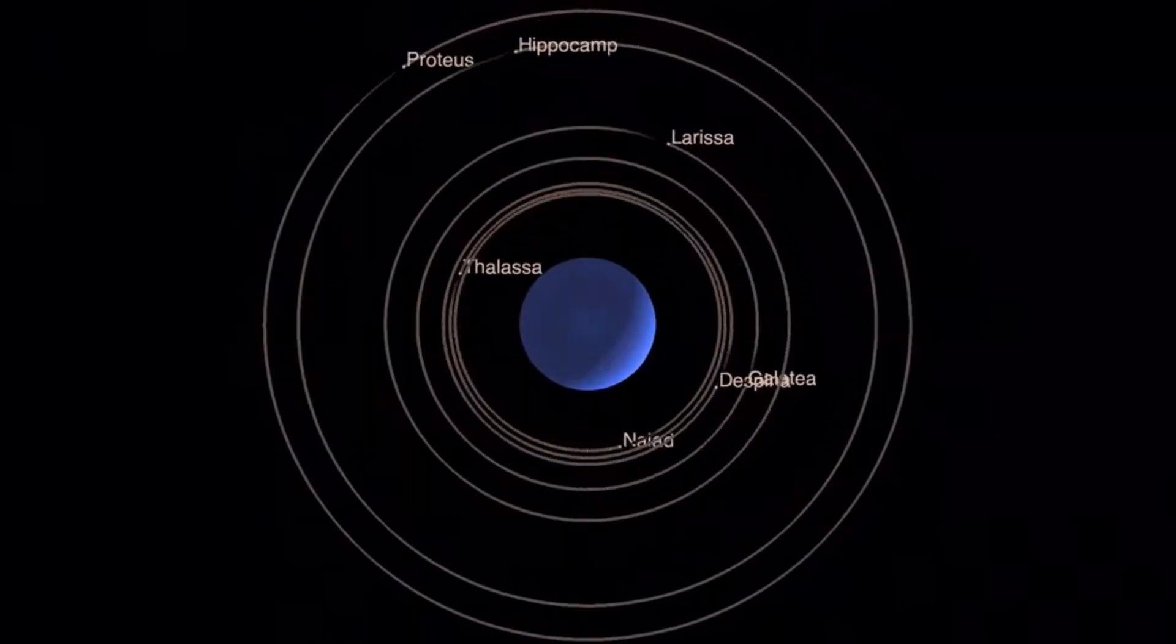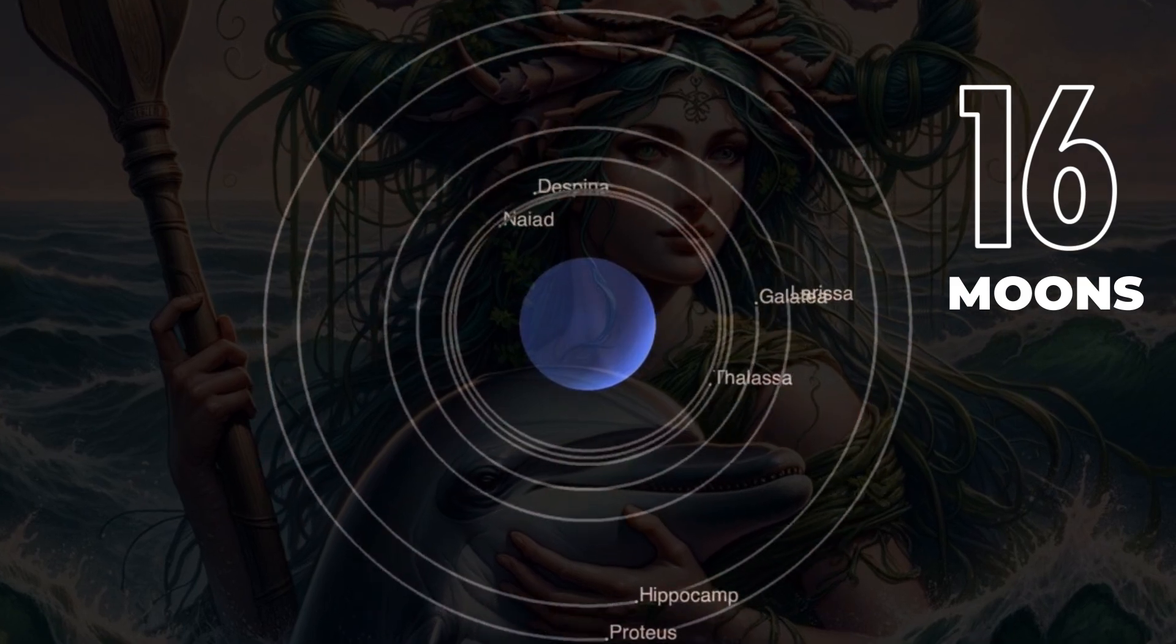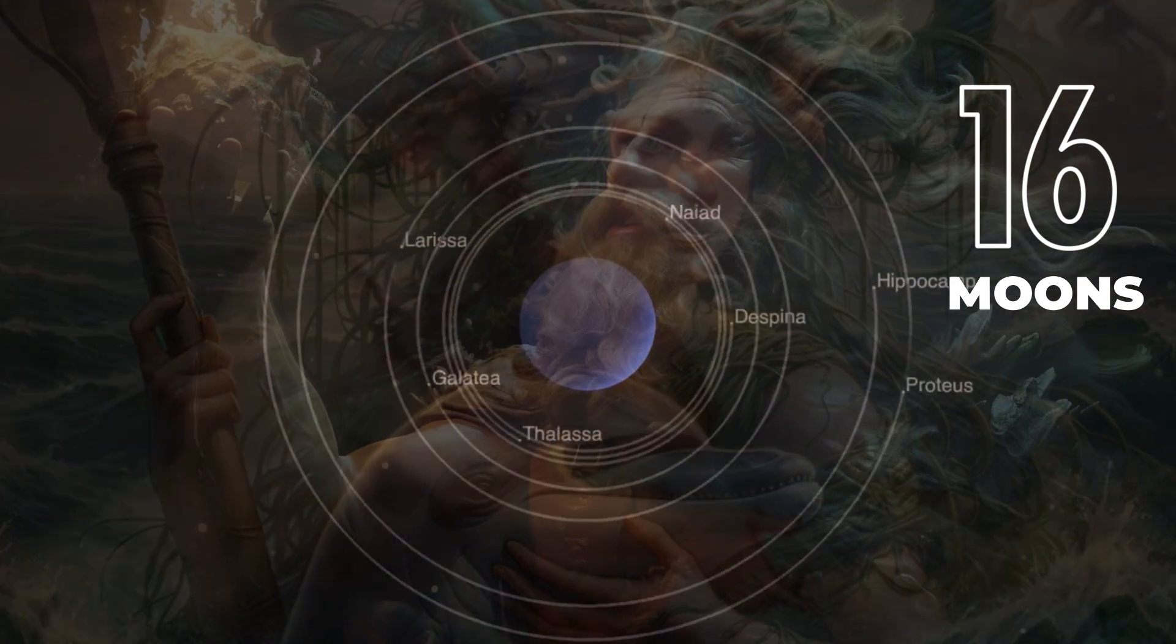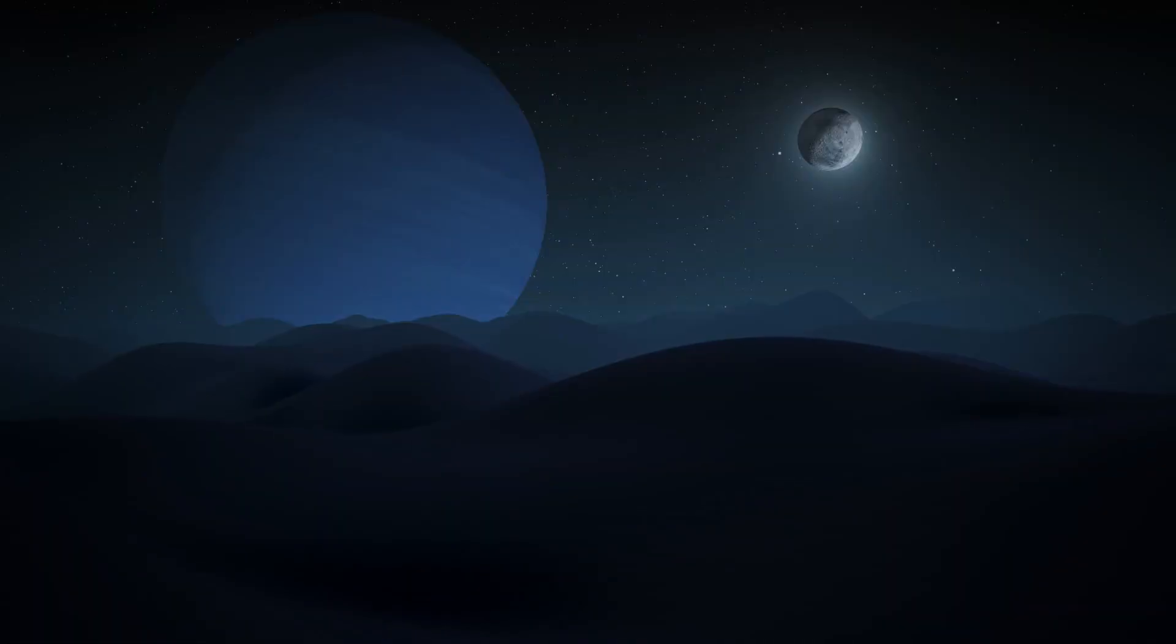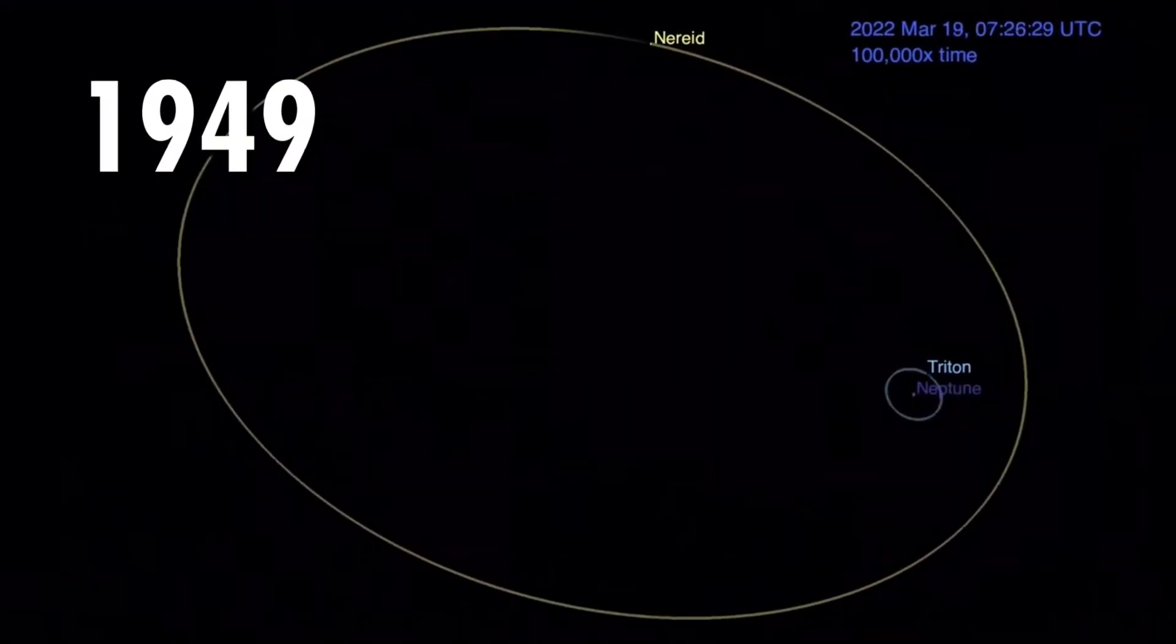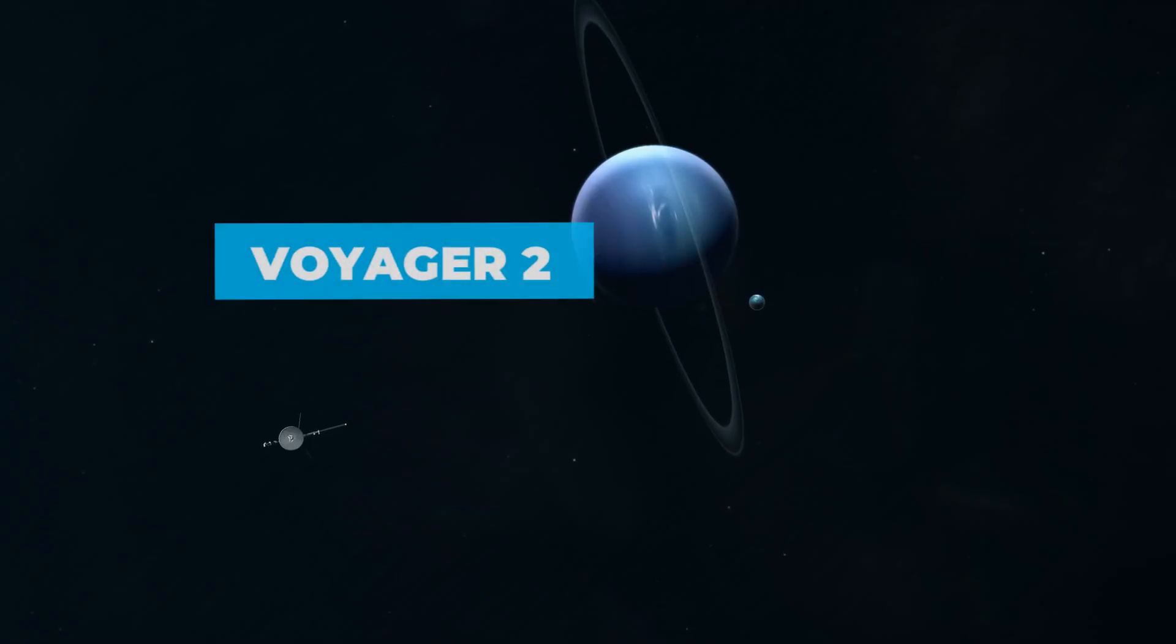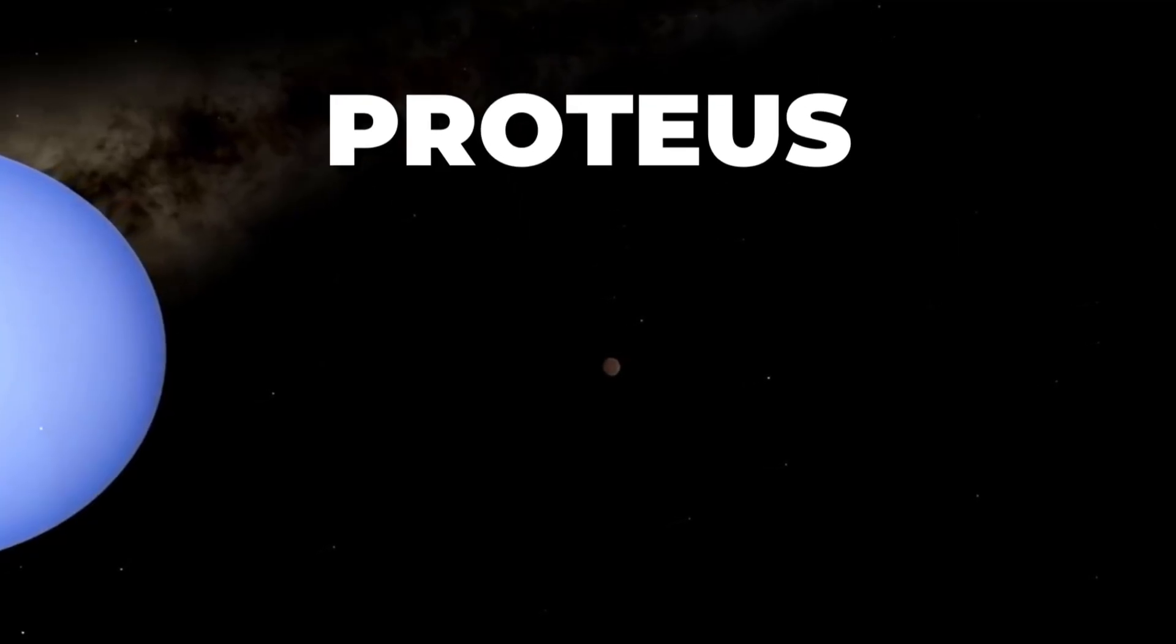Neptune boasts 16 known moons, named after minor water deities and nymphs from Greek mythology. The discovery process has spanned centuries, with Triton being the first identified in 1846. Nereid followed in 1949, and Voyager 2's flyby in 1989 revealed several more, including Proteus, Neptune's second-largest moon.